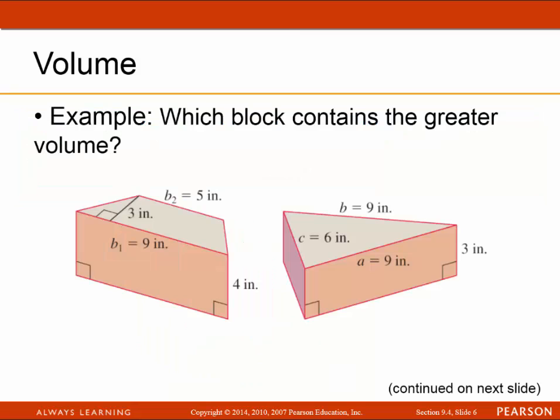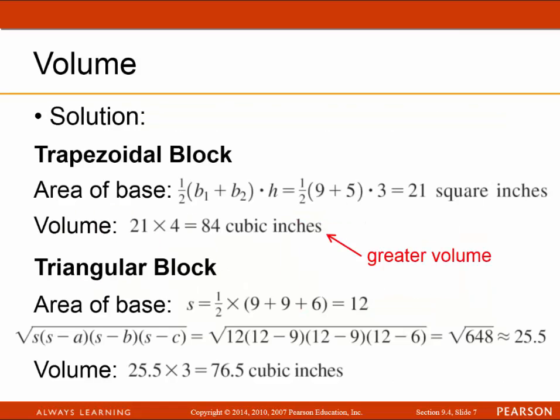For example, which block contains the greater volume — the one on the left or the one on the right? The trapezoidal block has an area of the base equal to 21 square inches, giving a volume of 84 cubic inches. The triangular block has a base area of about 25.5 square inches and a volume of 76.5 cubic inches. Therefore, the trapezoidal block has the greater volume.